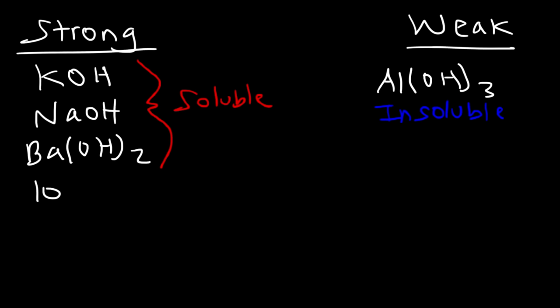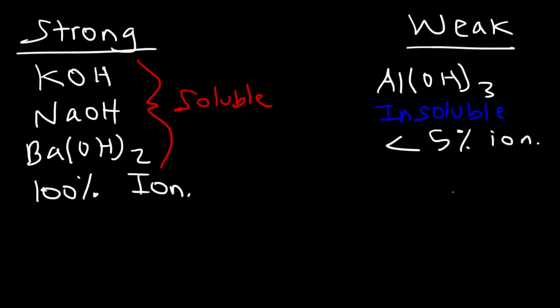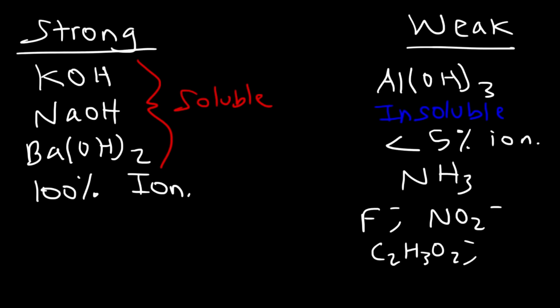Strong bases have essentially 100% ionization; weak bases have less than 5% ionization. Other examples of weak bases include ammonia and the conjugate bases of weak acids: fluoride, nitrite, acetate, cyanide, and HSO₃⁻ are all weak bases.